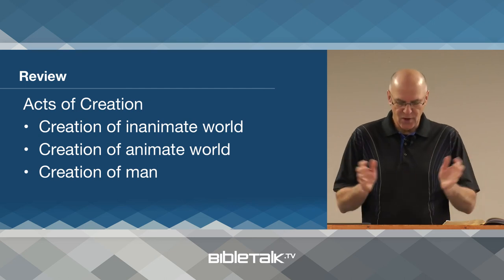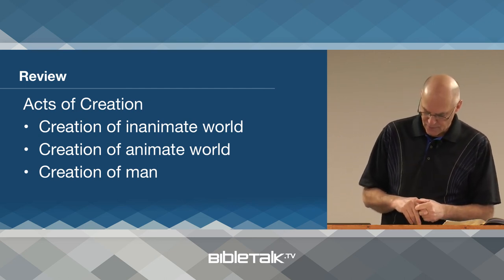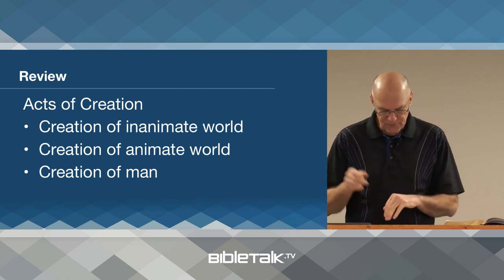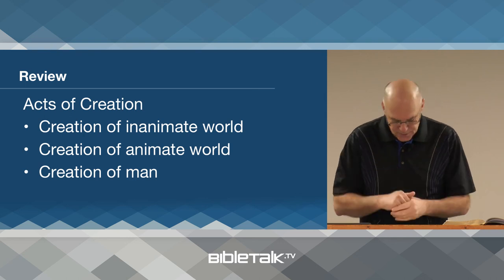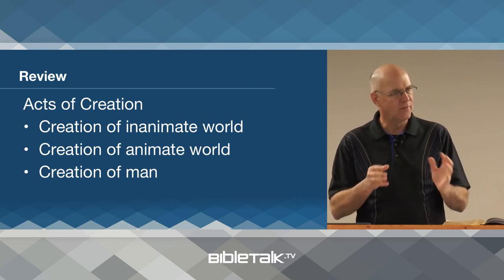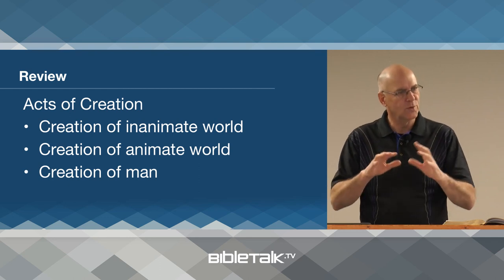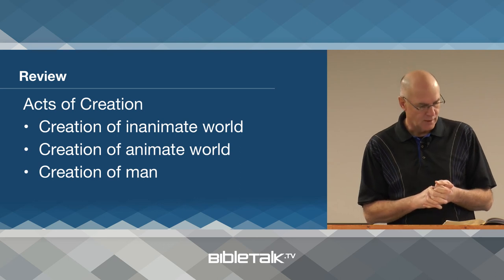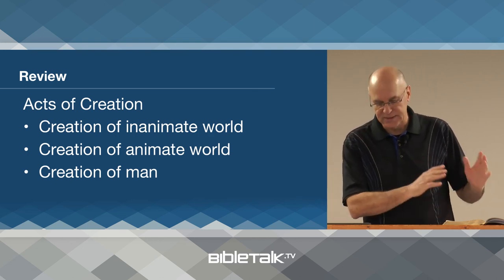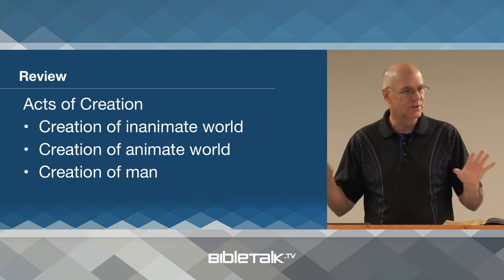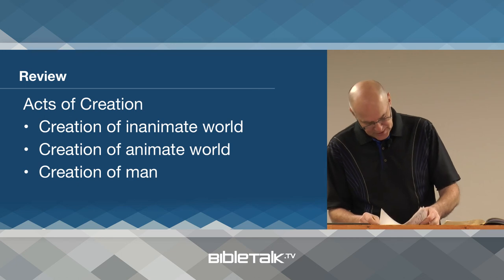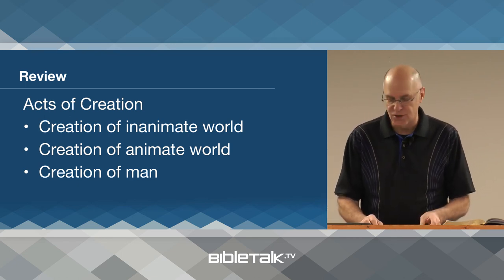In Genesis chapter one we see the panorama of creation unfolding in six days. The world and all that is within it is created and set into place. There's going to be a mention of the seventh day and then Moses will telescope into this panorama to give us more detail about the creation of man and also a little more detail about the pre-sin environment — what the world was like before sin. After this detail, Moses will begin to tell the story of the first man and woman after the creation is complete.